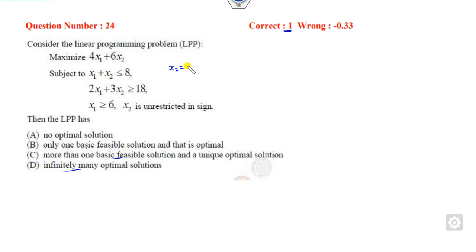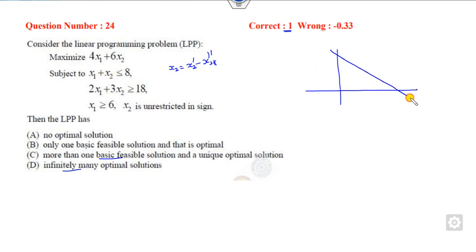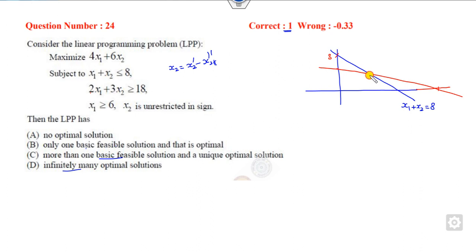Normally, whenever there is an unrestricted variable, you have to replace them with two positive variables. But since it is MCQ, there is no need to consider this. What you can do is draw the graph of the first line. This is the line x1 plus x2 equals 8. How you can draw the second line: whenever x1 is 9, this is 9, and this is 6. This is my 8, this is my 6. What is the point of intersection?